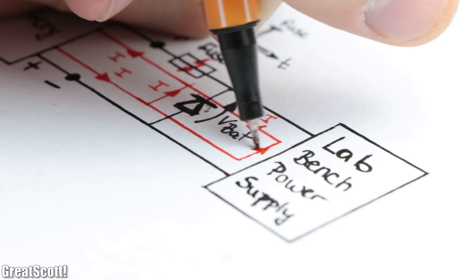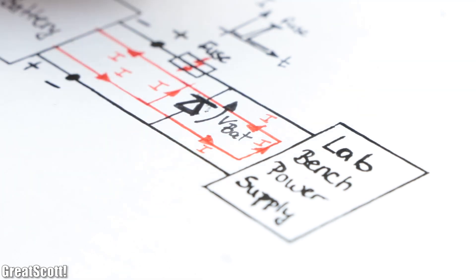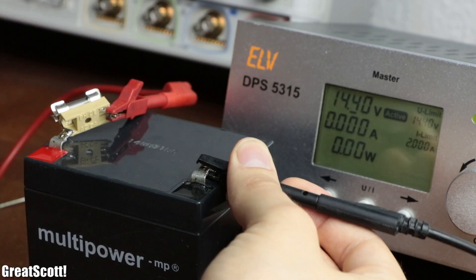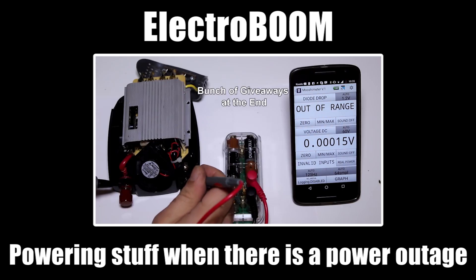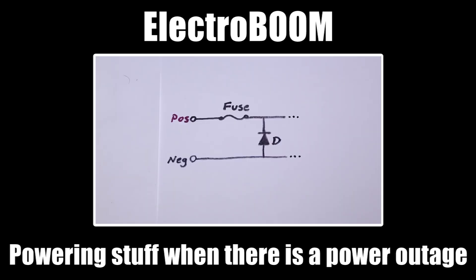And the next problem is that a reverse current flow through the inner electronics is still possible. Which in my case was apparently not a problem. But take for example ElectroBOOM's inverter, which got completely busted by reverse voltage and also featured the same protection circuit.